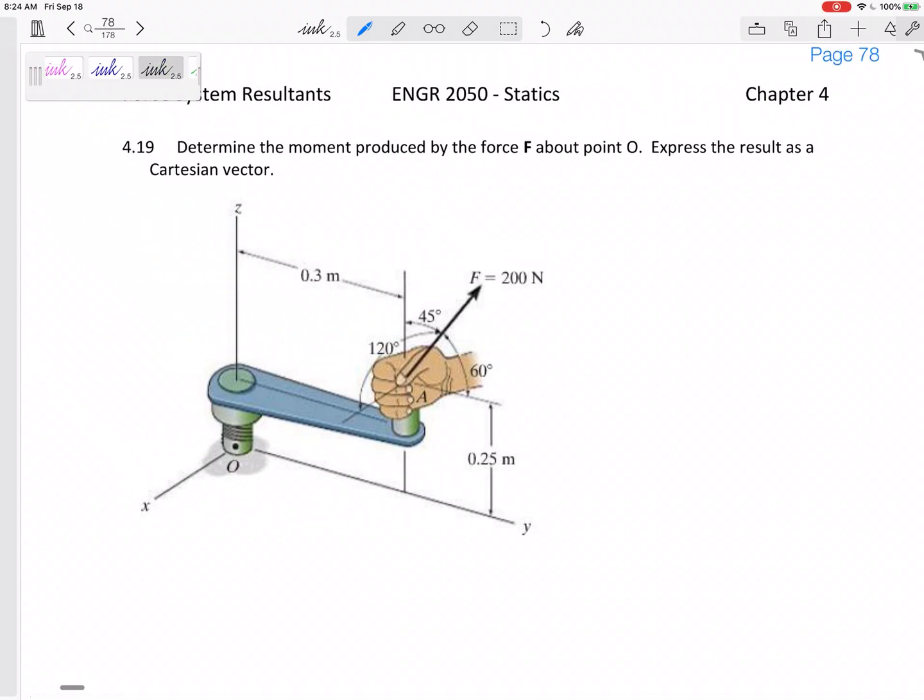All right, so problem 4.19 in our notes: determine the moment produced by the force about point O. Moment about a point is r cross F, and this r needs to go from the point to the force.